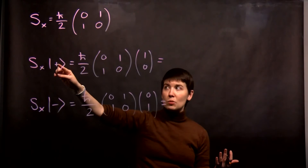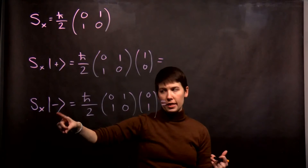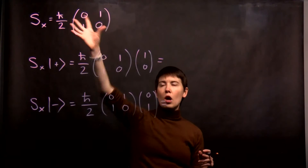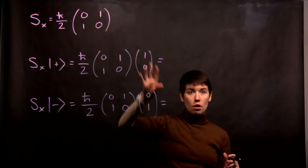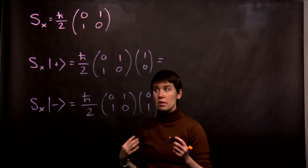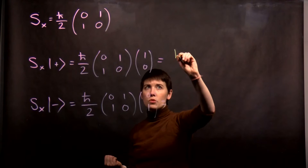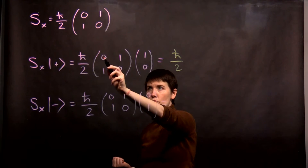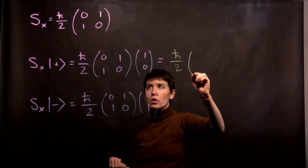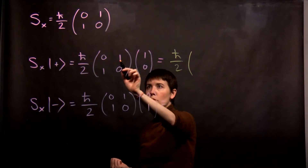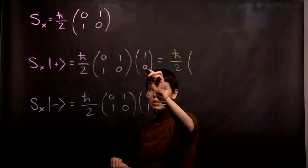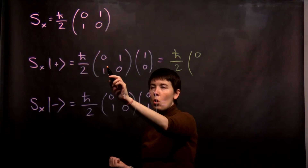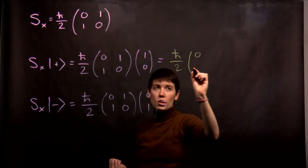I'm going to apply it to spin up in the z direction and spin down in the z direction. I've already copied down this operator, then applied to our ket states in this matrix representation. First step is to propagate through that coefficient out front. Row times column: 0 times 1 is 0, plus 1 times 0 is 0. Row times column: 1 times 1 is 1, plus 0 times 0 is 1.